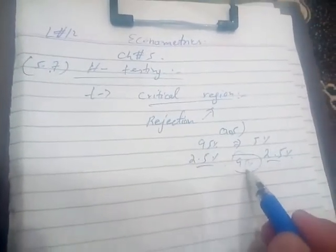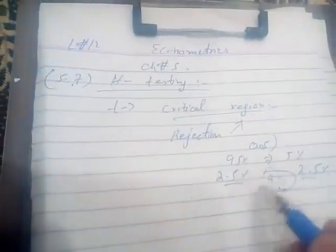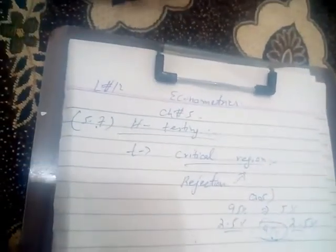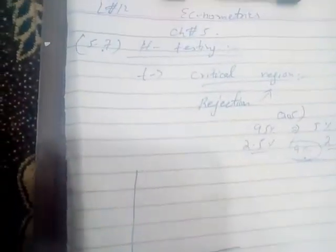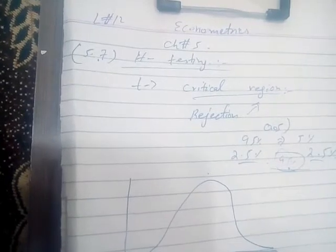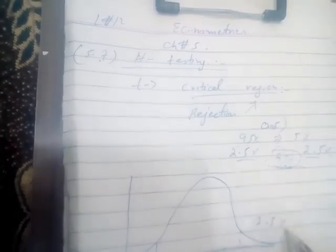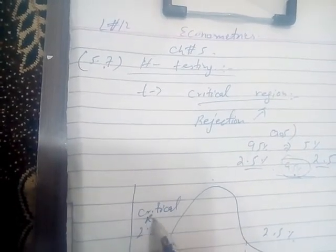इसका diagram कुछ ऐसा है — एक interval base है, interval base भी discuss करता है। 95% acceptance area और T-statistic को जो calculate करते हैं, interval base पे या value base पे। Book में graph बनाए हुए हैं। ये 2.5%, 2.5% — यह critical area यानी rejection region है।